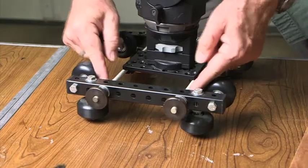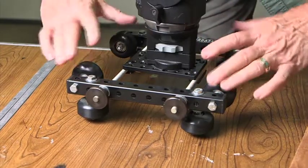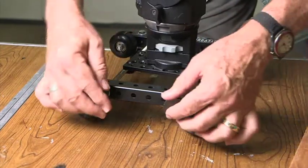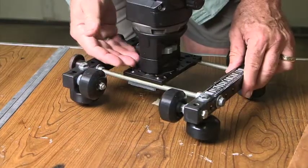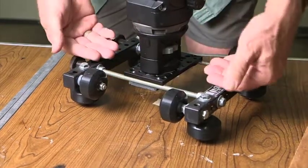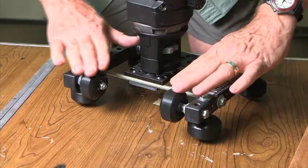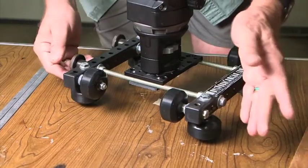Adjustment knobs allow you to change its width to fit rolling surfaces of different sizes. You can also invert the camera mount and use just the top wheels for rolling on a flat tabletop or smooth wood floor, for example.